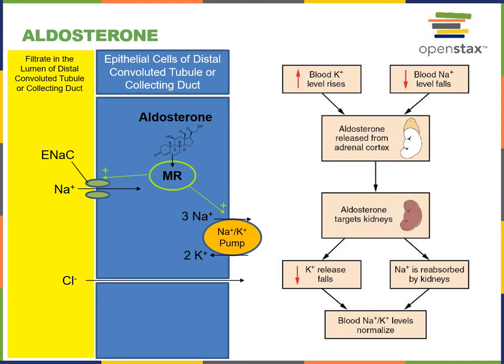The stimuli for aldosterone production are increased blood potassium or low blood sodium levels. As aldosterone has its effects in the kidney at the distal convoluted tubule and collecting duct, it leads to potassium secretion and sodium reabsorption, helping to restore homeostatic concentrations of sodium and potassium.